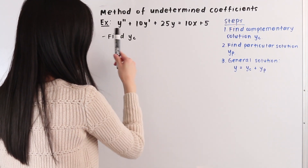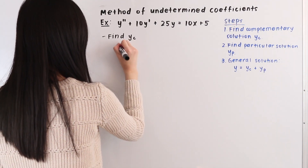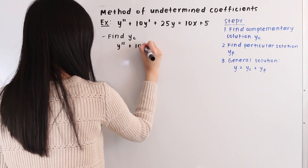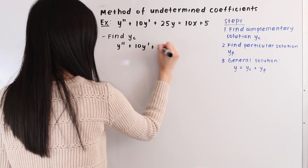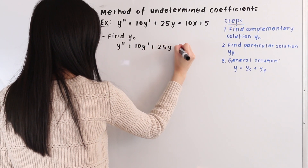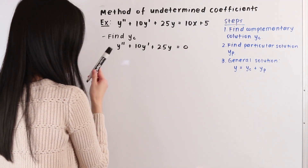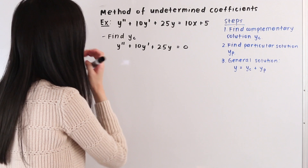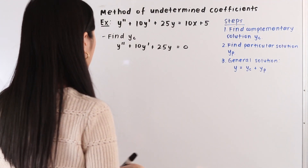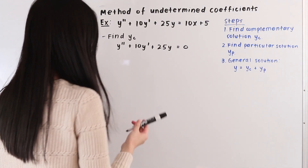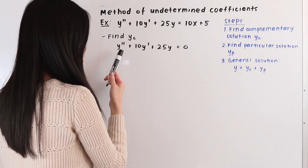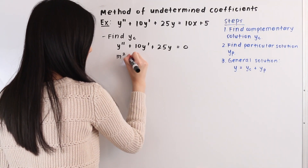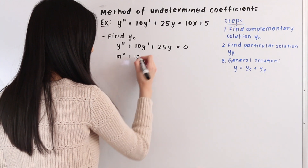So the homogeneous version of this differential equation is y double prime plus 10y prime plus 25y is equal to 0. Here we have a second order homogeneous linear differential equation with constant coefficients. The next thing we're going to do is find our auxiliary equation, so we replace the y double prime with m squared and the y prime with m.